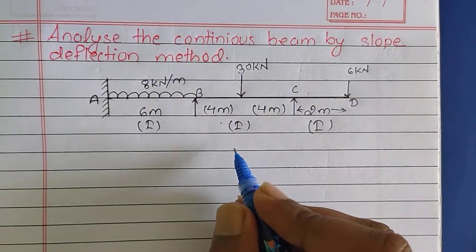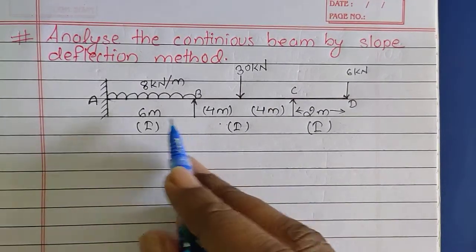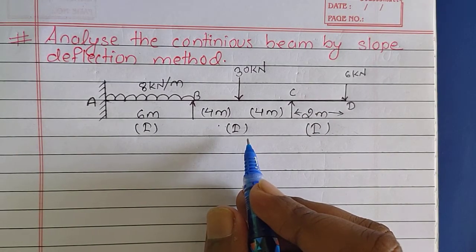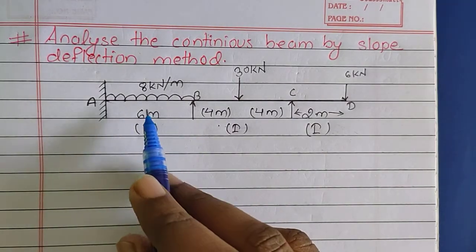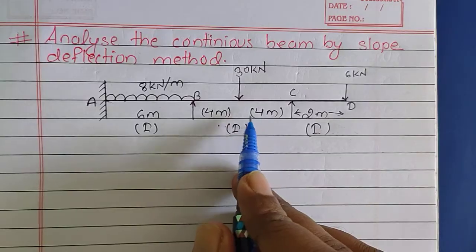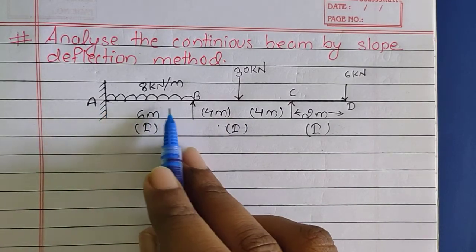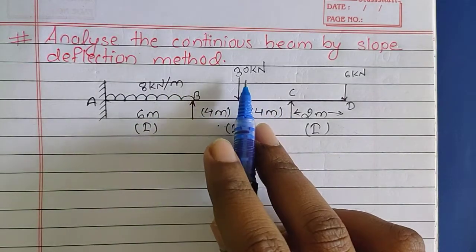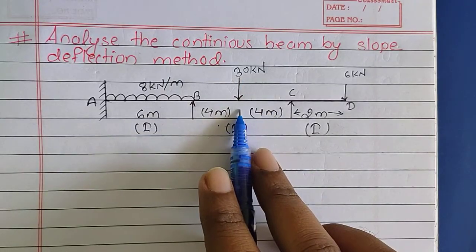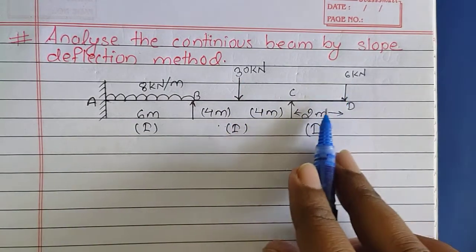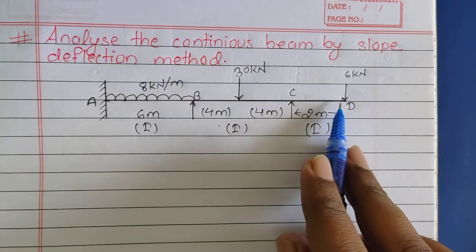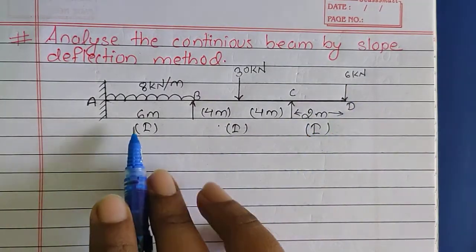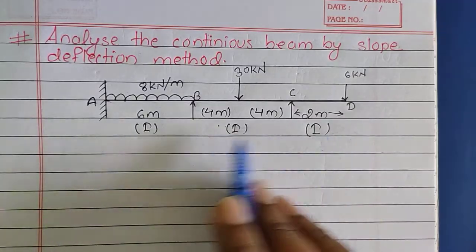Hello everyone, welcome to my YouTube channel Civil Learning Online. Today in this video I will be discussing the slope deflection method of analysis of indeterminate structures. In this numerical we have a continuous beam with span AB loaded by a UDL of 8 kN per meter, span BC carrying a point load of 30 kN at mid span, and a cantilever portion CD with a point load of 6 kN over a span of 2 meters. Flexural rigidity is I in each case.